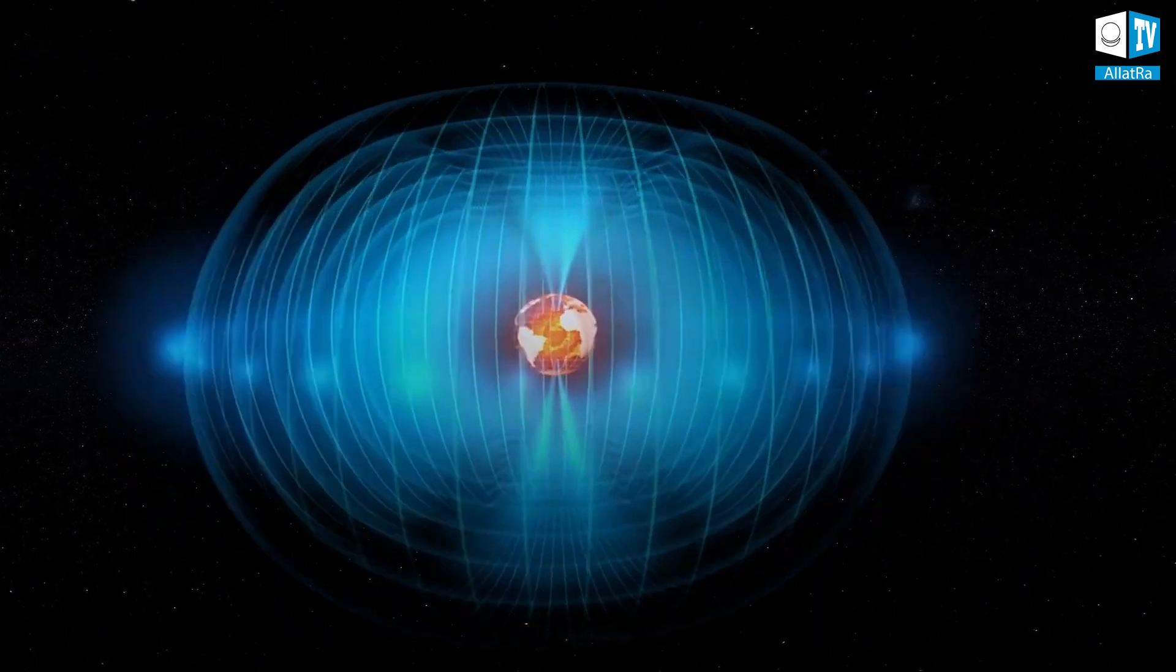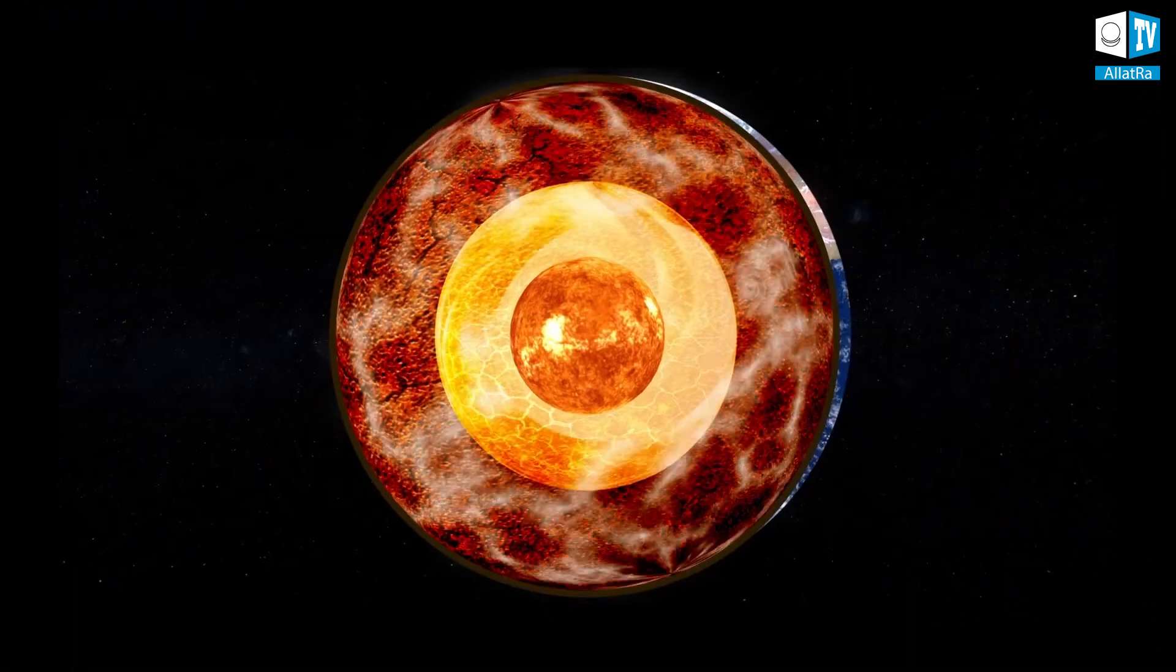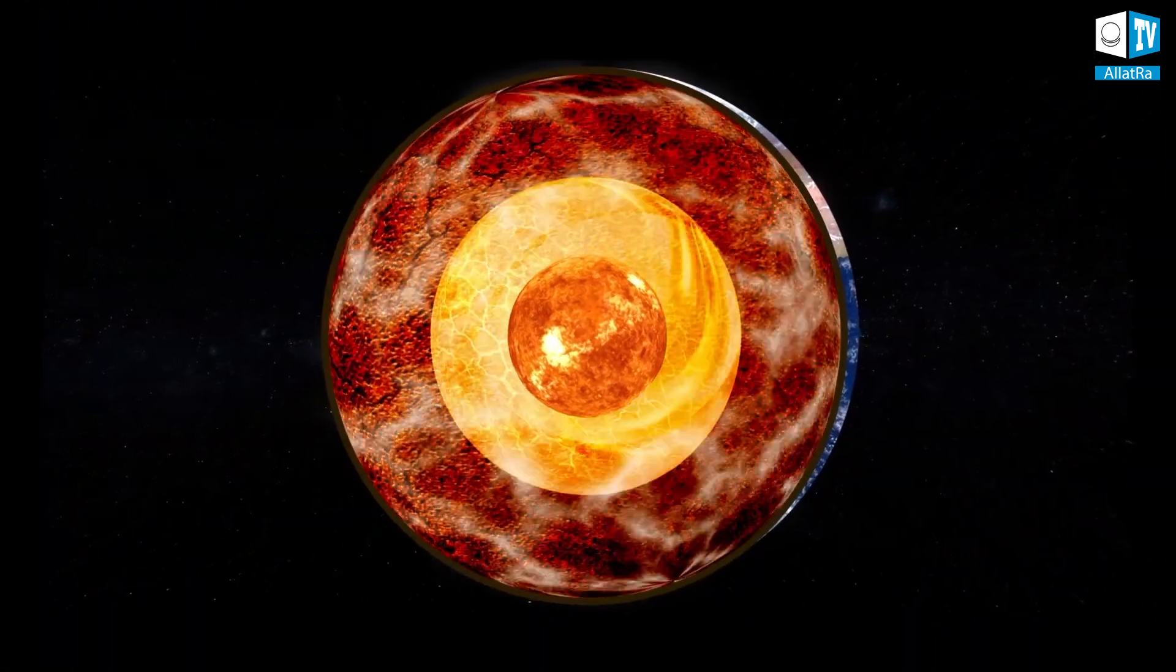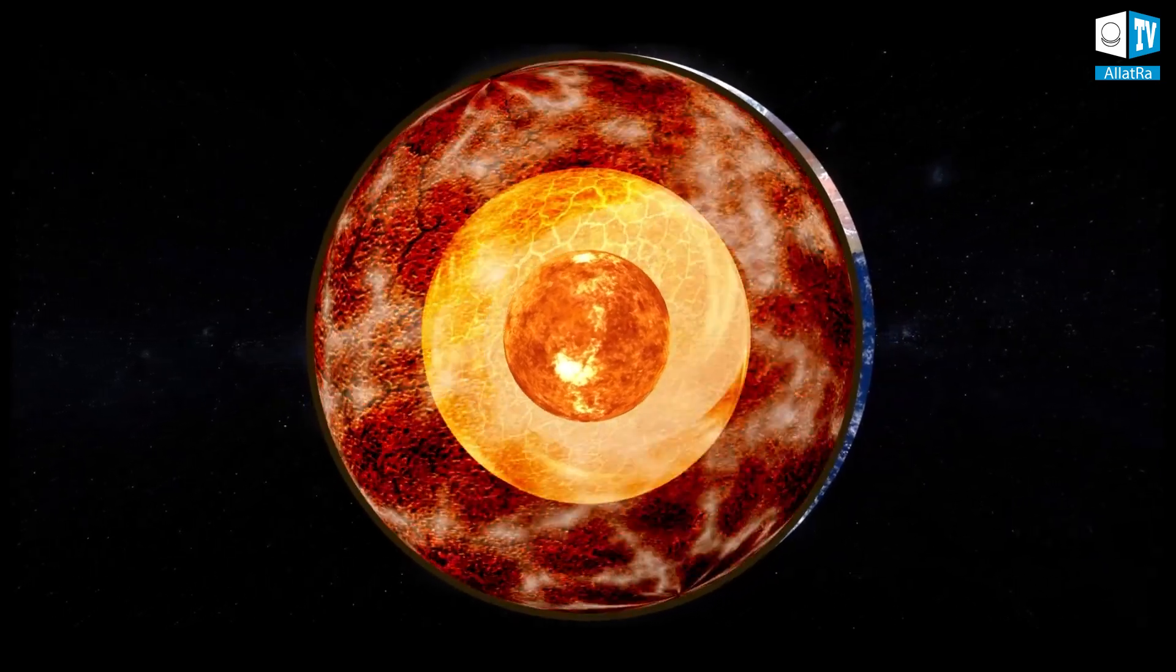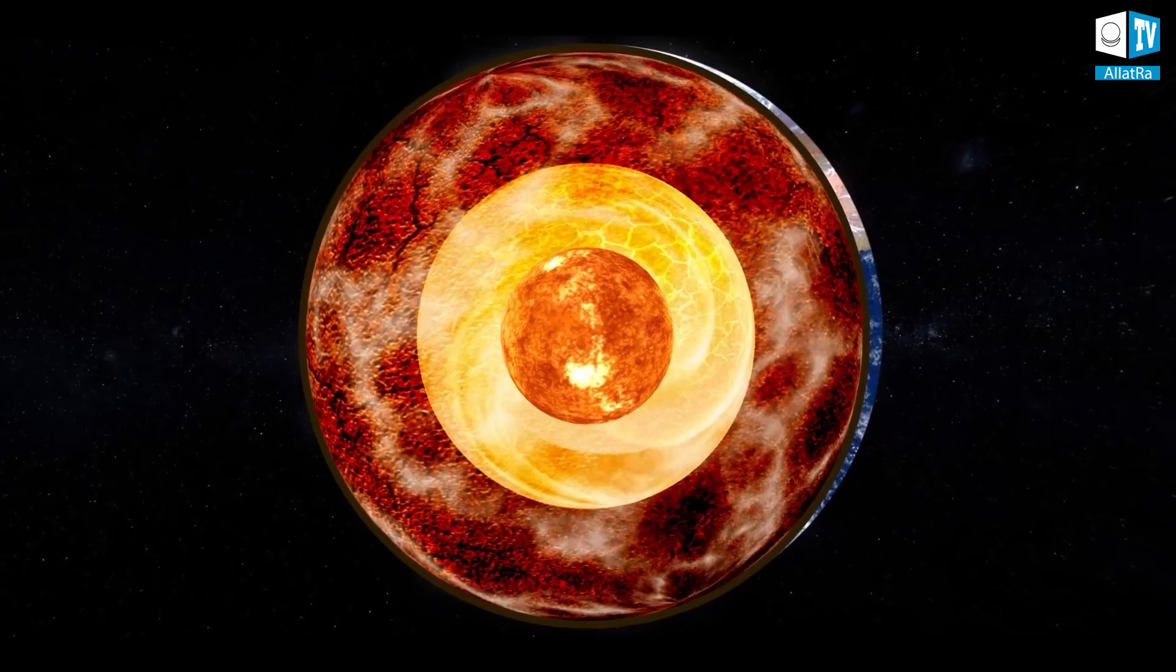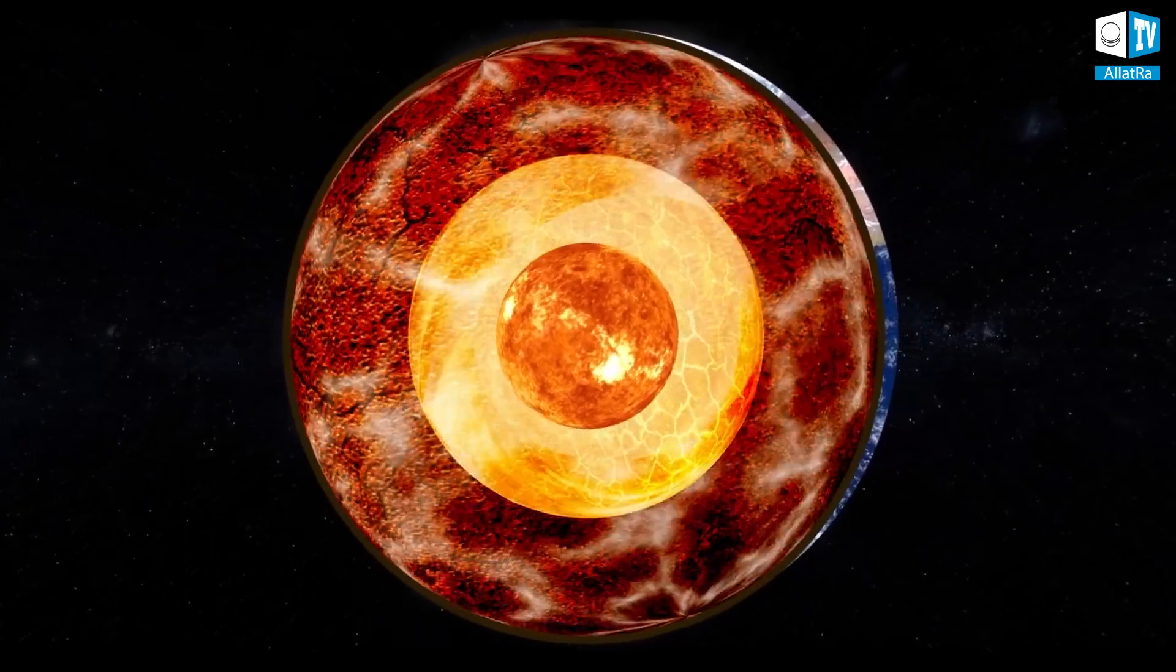The core forms the magnetic field on the principle of a dynamo. The essence of this principle is that the rotation speeds of the inner solid core and the outer liquid core are different. As a result of the friction between these two structures, an electric charge is generated.